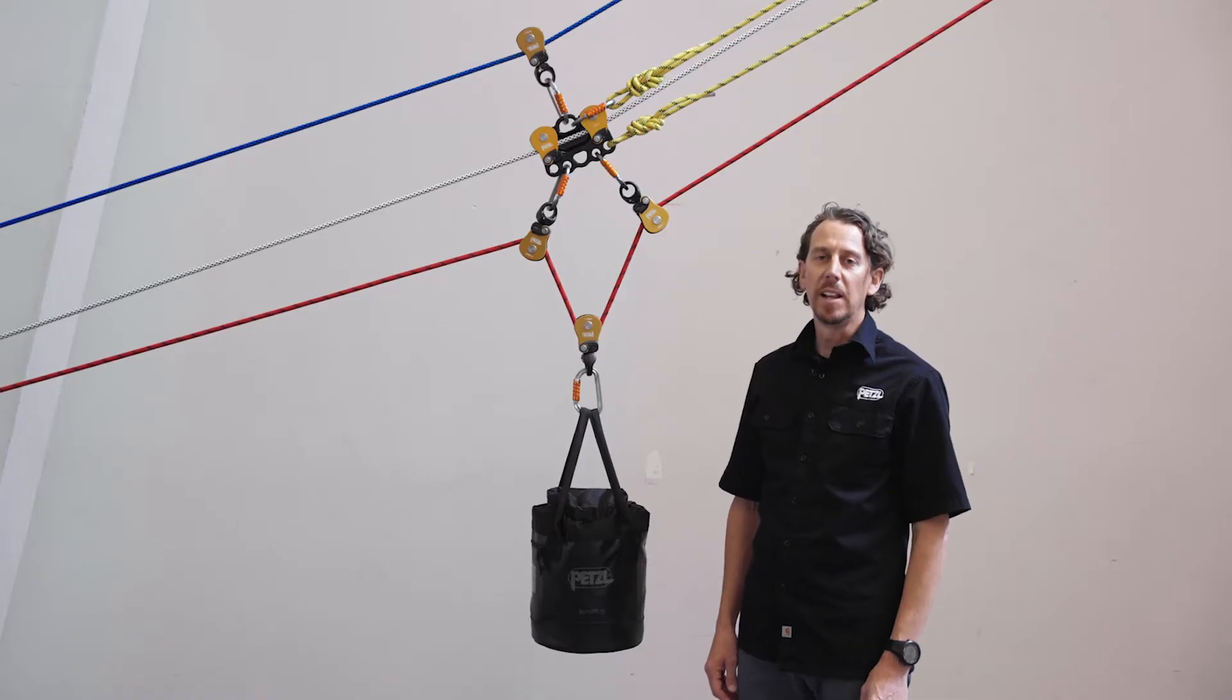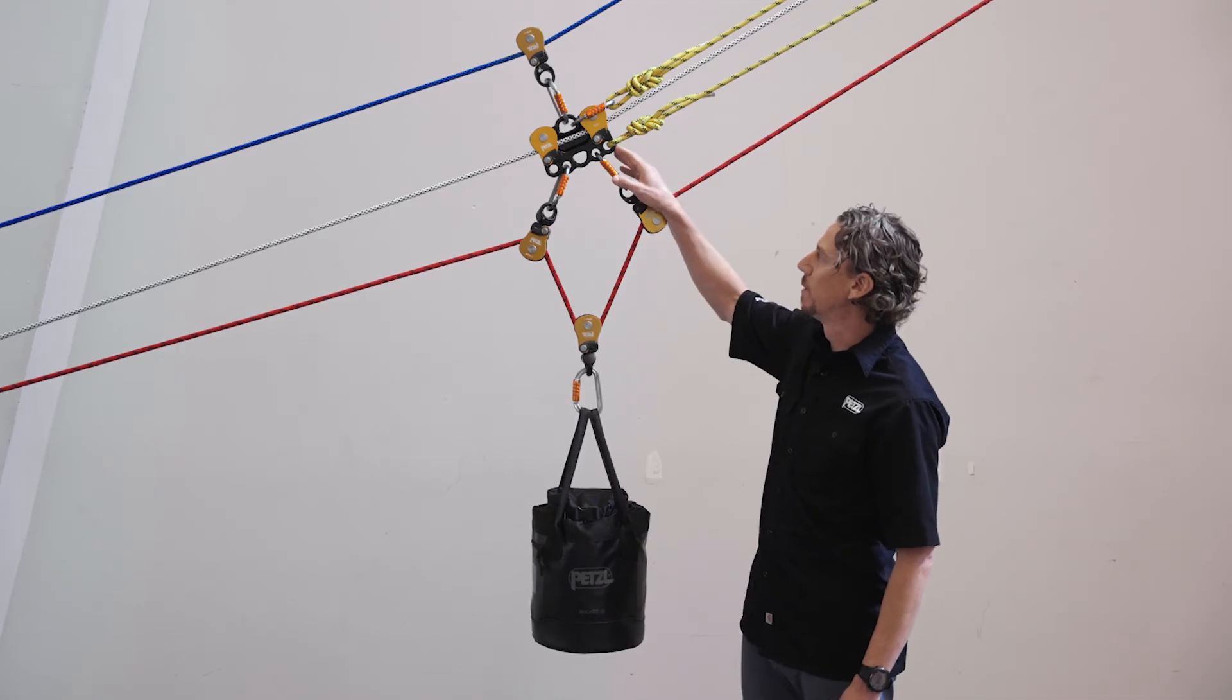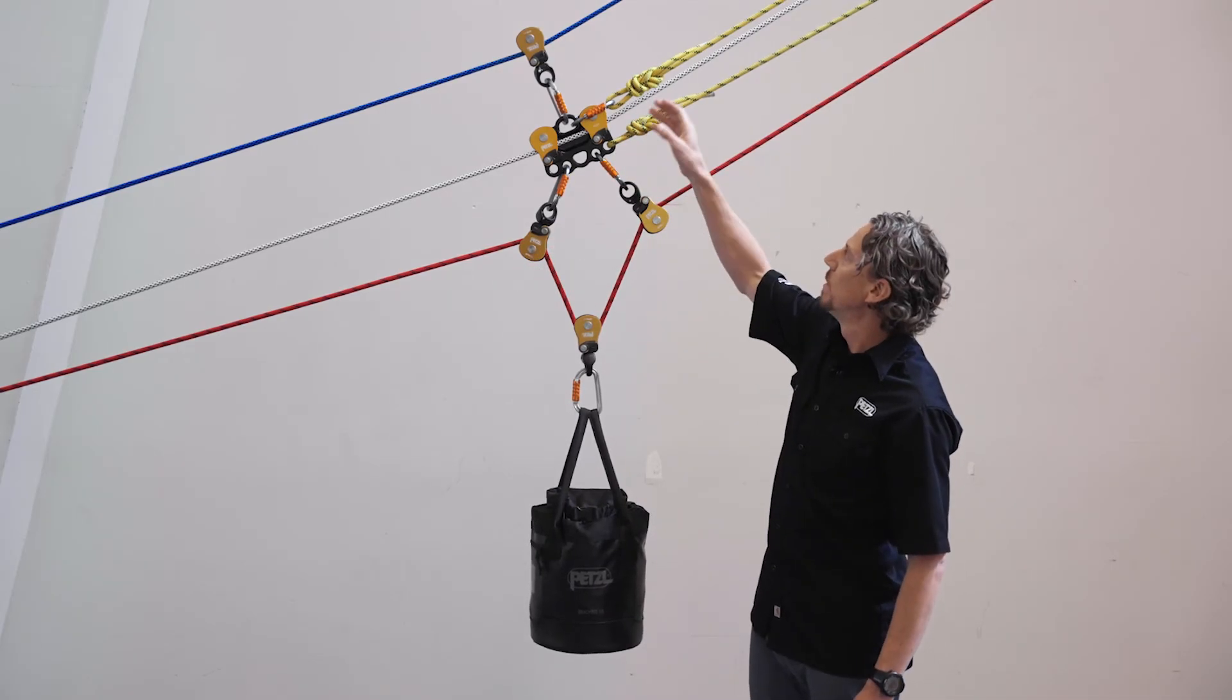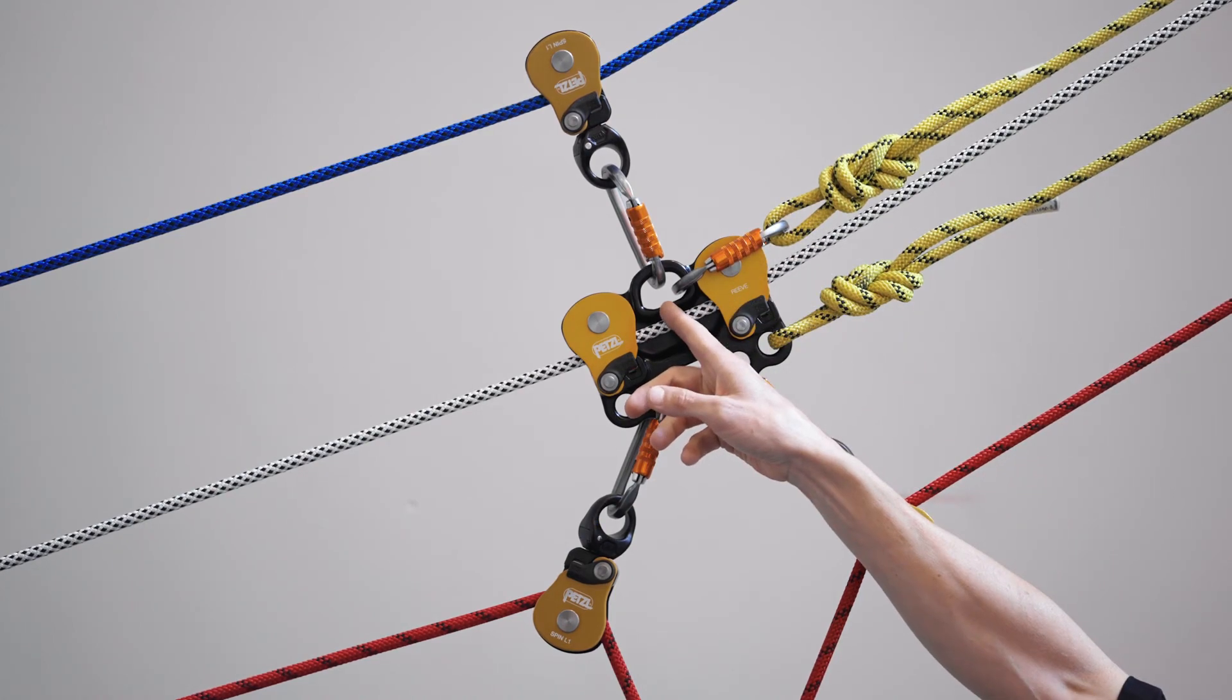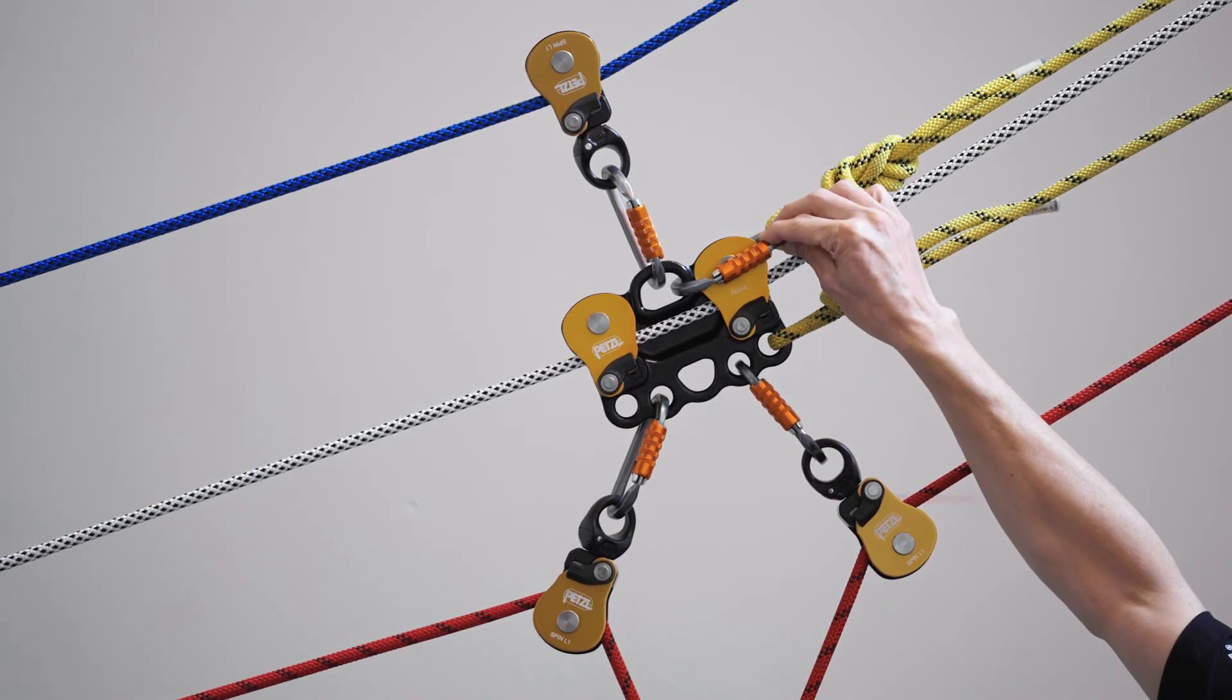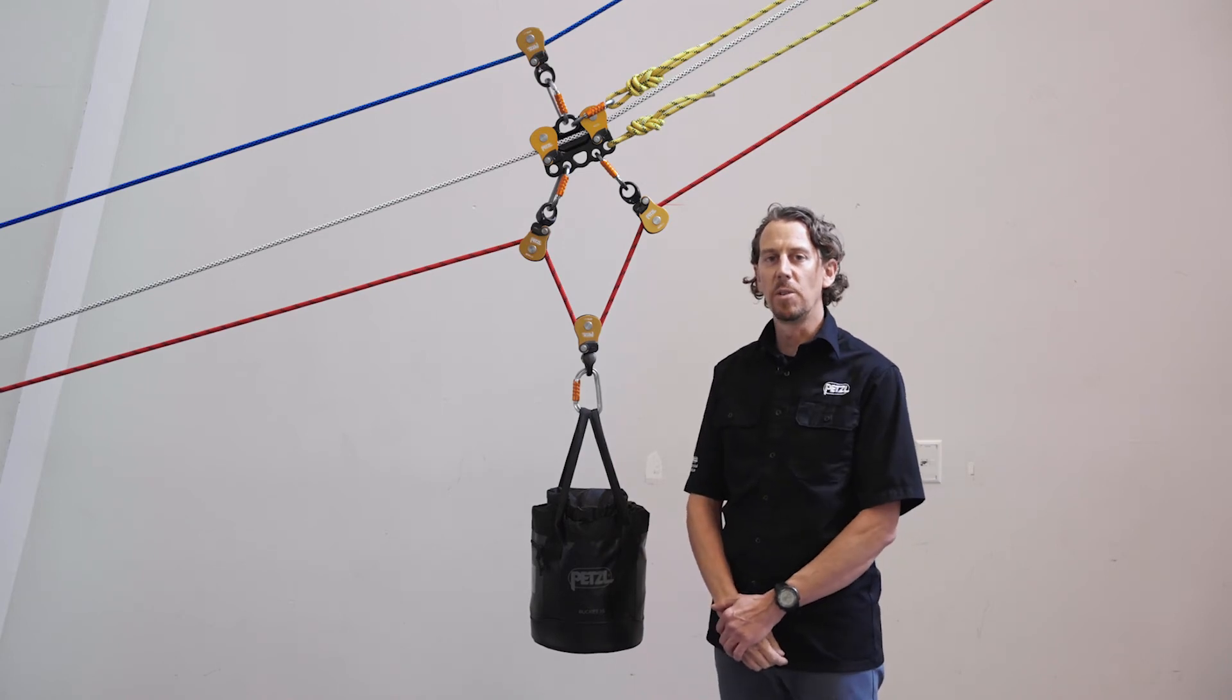On a sloped highline, a redundant system is still required to help prevent the Reeve from traveling down the highline. To do this, we've attached a second control line to the upper attachment hole on the Reeve using a carabiner that is large enough to fit over the uphill pulley sheave. This can be done using a carabiner such as the AMD or the William.